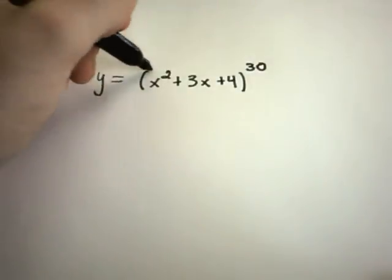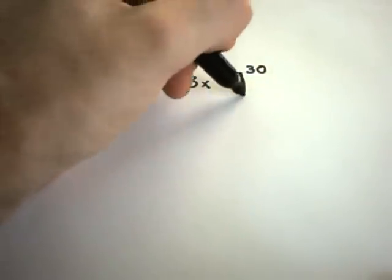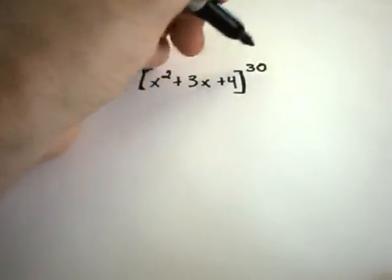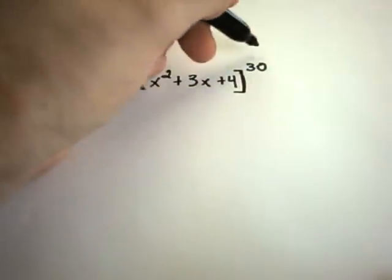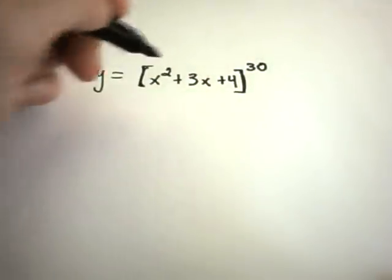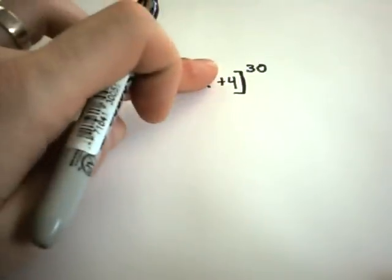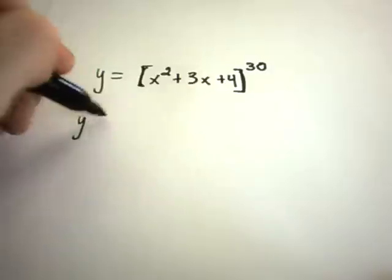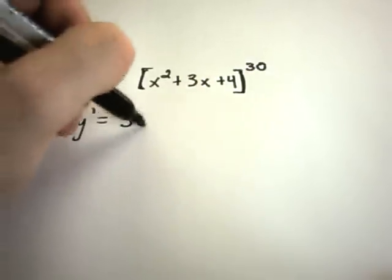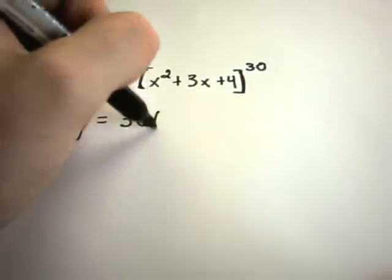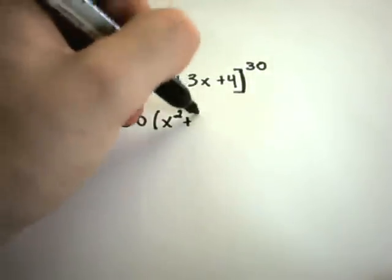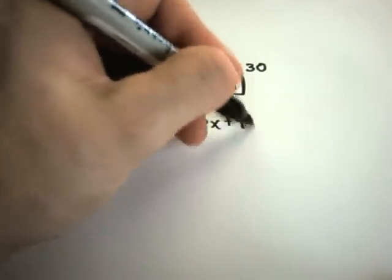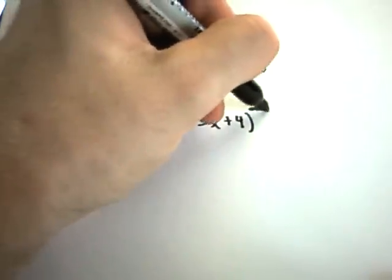You can now think about the outside function as being the stuff raised to the 30th power. It even kind of looks like it's the most outside. So if on the inside we just had x to the 30th, the 30 would come out front. So the same thing happens here. The 30 will come out front. I'll leave the inside part alone. I'll take one away and get to the 29th power.